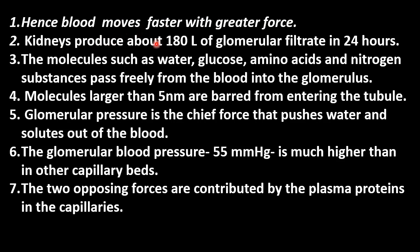Kidneys produce about 180 liters of glomerular filtrate in 24 hours — that is, in one day. In the filtrate, water, glucose, amino acids, and nitrogenous substances pass freely from the blood through the glomerulus.